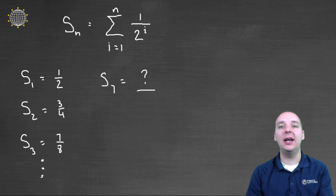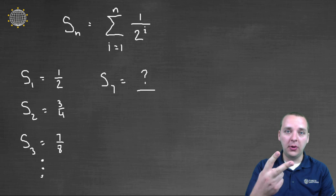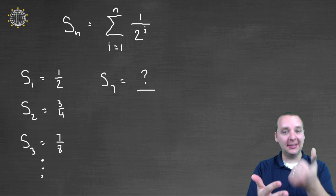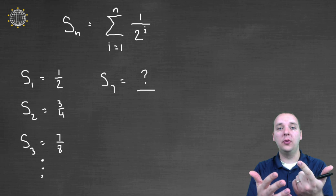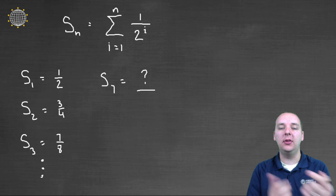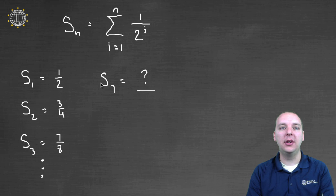So what if somebody asked you for S sub 7? That's the sum of the first seven terms. You could sit down with your calculator and do a half plus a fourth plus an eighth plus a sixteenth plus a thirty-second, a sixty-fourth, and a 1 over 128. You could do that manually by hand, but these are getting very tedious. And much less if they wanted S sub 100, that would be almost impossible to do by hand. Well, it turns out we can do these guys on the calculator.